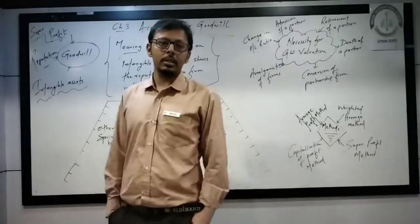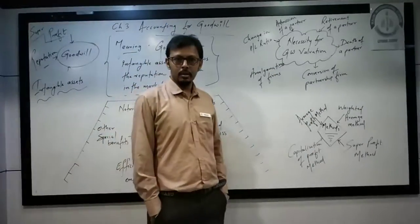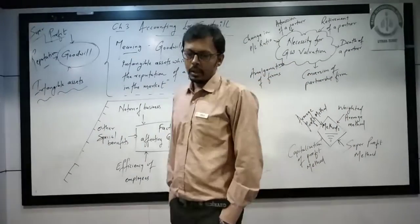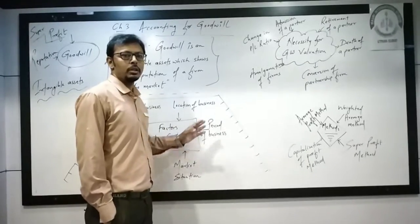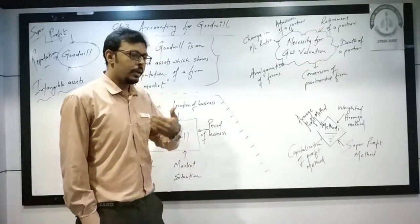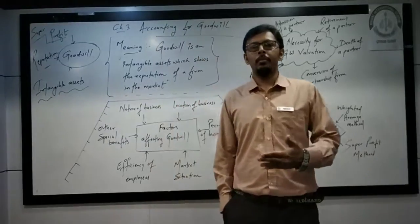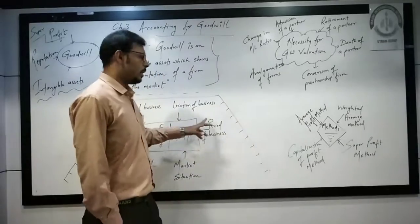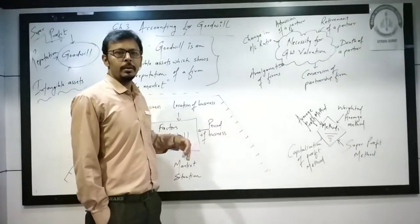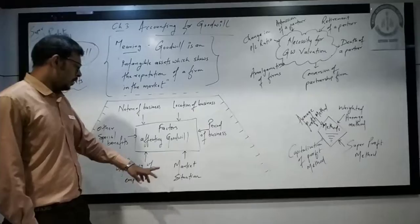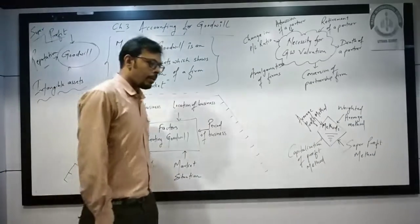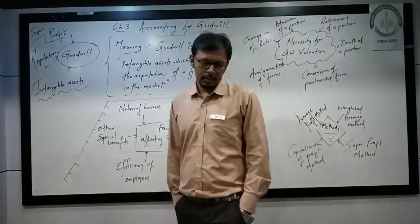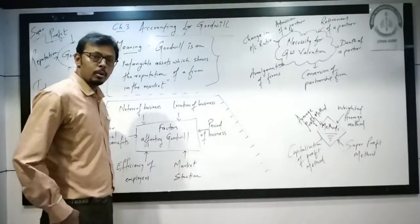Period of business: if I am running the business since the last 5, 6, or 10 years, I am very established in the business and I have so many customers. A new entrepreneur will take much more time to establish himself in the market, but an old entrepreneur can easily get goodwill. Market situation: if I am running the business as a monopoly — I am the only seller in the market — then I might have a much greater amount of goodwill.